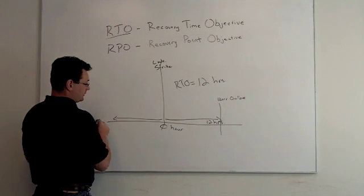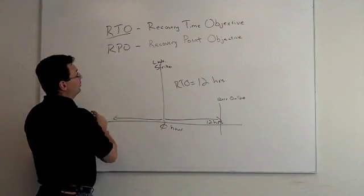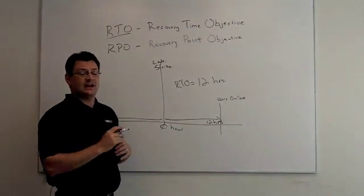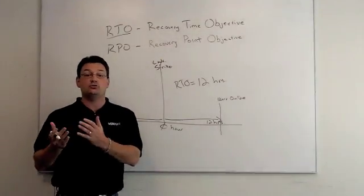And then you go backwards in time from zero event. The longer you go from zero event is your RPO, Recovery Point Objective. It's really a measurement as to how fresh or stale the data is when you do recover it.